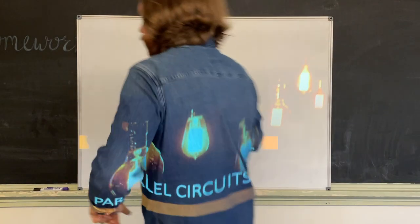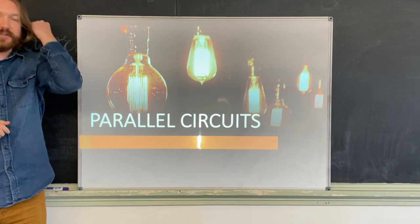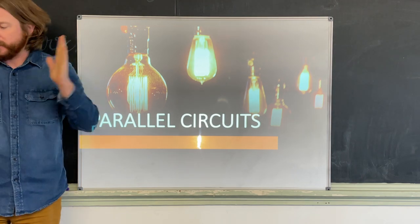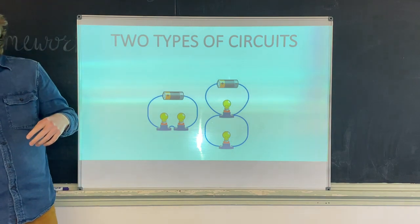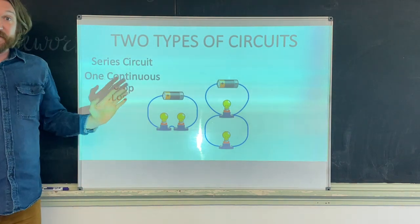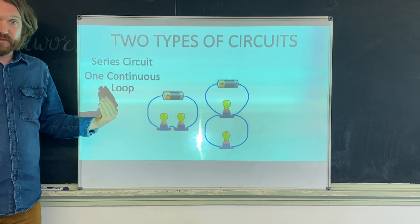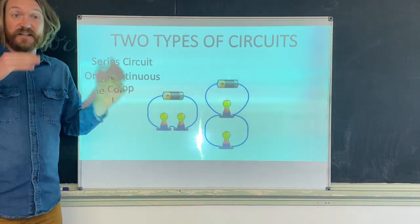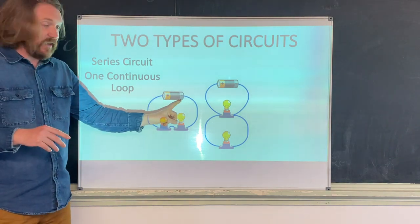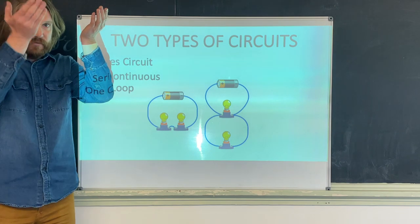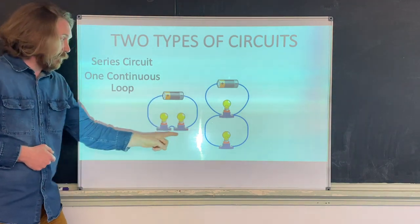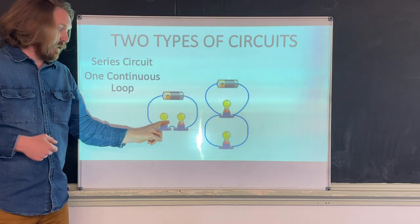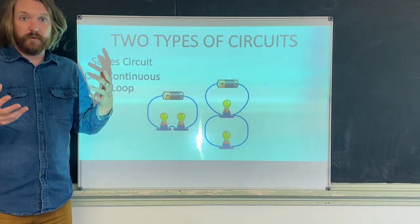Hello and welcome to another physics video lecture. Today we are going to keep talking about electricity and move on to parallel circuits. Last class we saw there are two types of circuits. A series circuit is one continuous loop — electricity is electrons moving from the negative end of a battery to the positive end, lighting up anything in between.